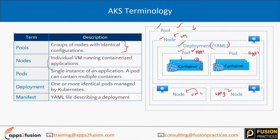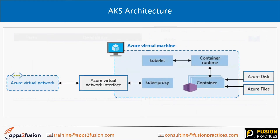A pod is a combination of multiple containers. These are the terminologies you need to know before working with AKS. For the AKS architecture, you have an Azure Virtual Network on the left-hand side. An Azure Network Interface (NIC) is attached to your virtual machine, and this talks to kube-proxy.